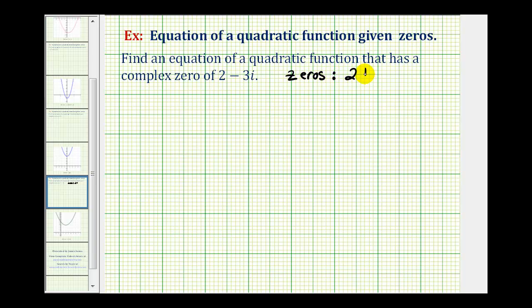Our zeros are 2 plus or minus 3i. Now even though having the zeros of a quadratic function gives us information about the factors of the quadratic function as we saw in the previous video, the zeros of a quadratic function are the x values for which f of x is equal to zero.